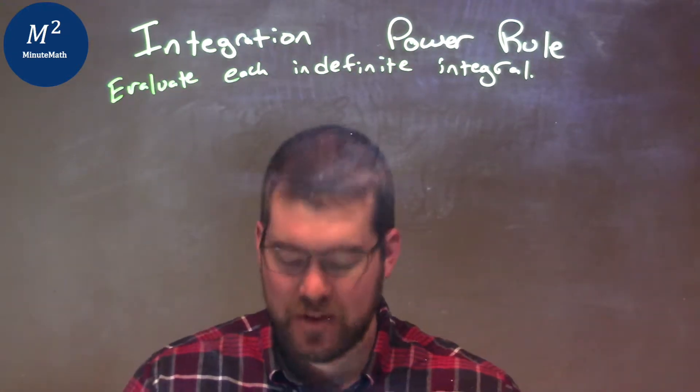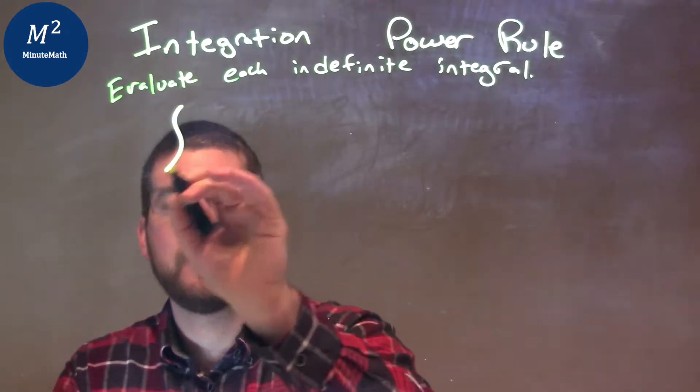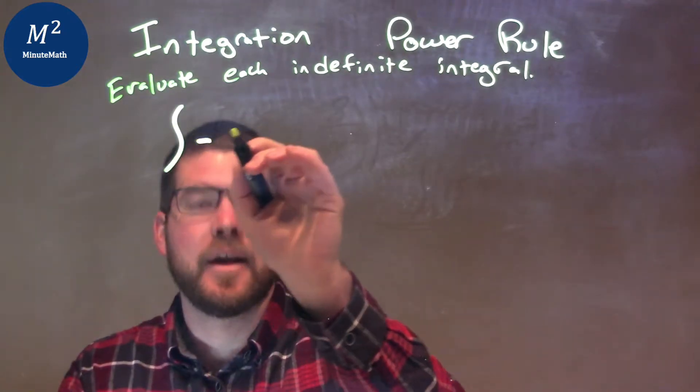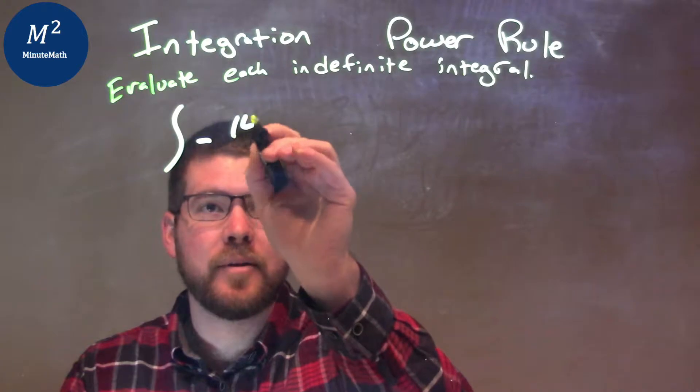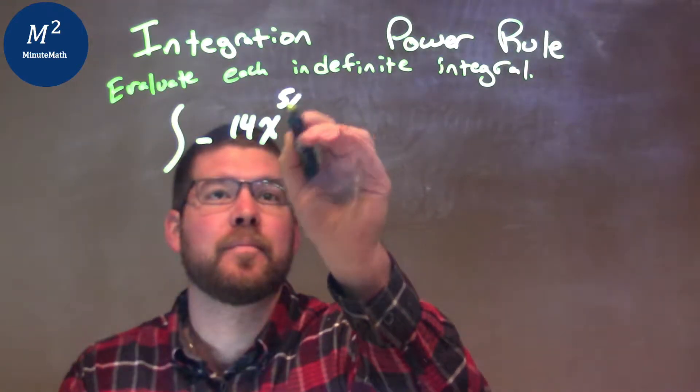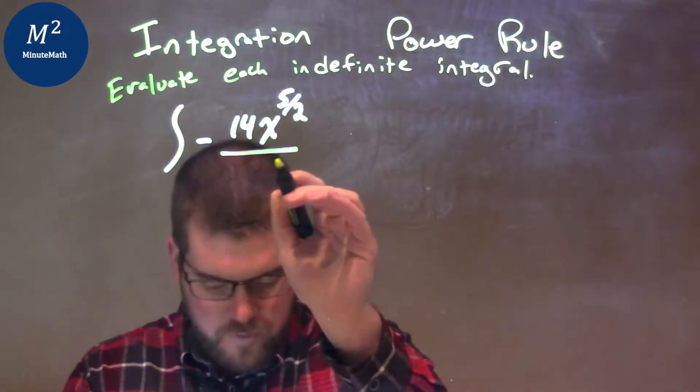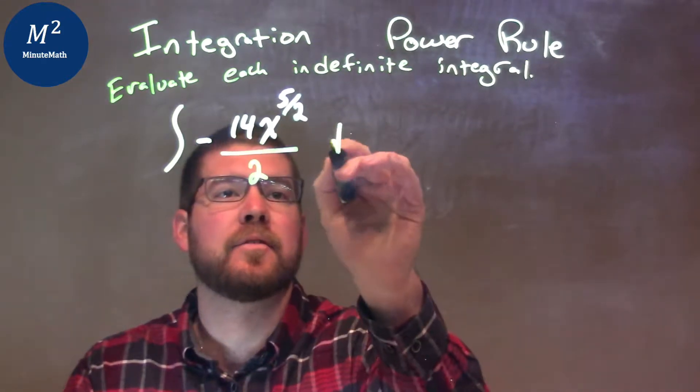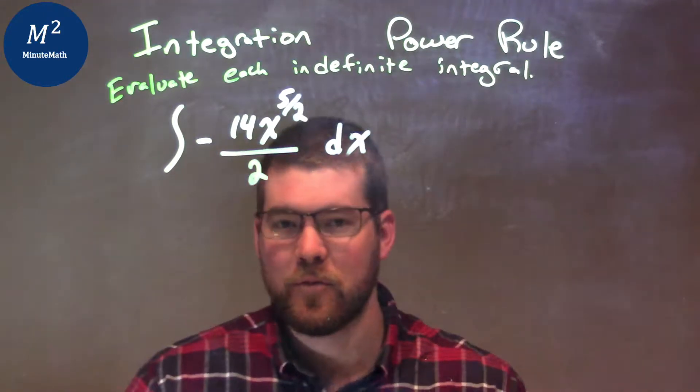If I was given this integral here, the integral of negative 14x to the 5 halves power over 2x. Now, you're going to have to be pretty good with your fractions here.